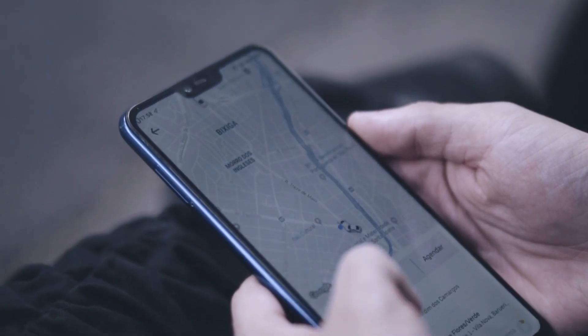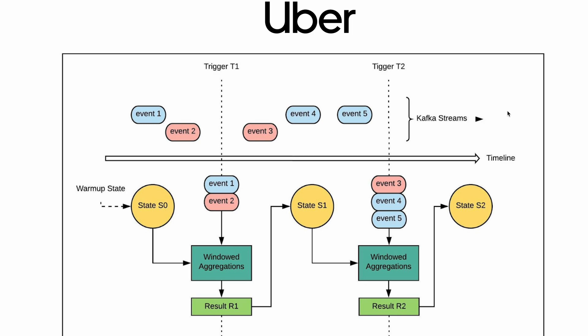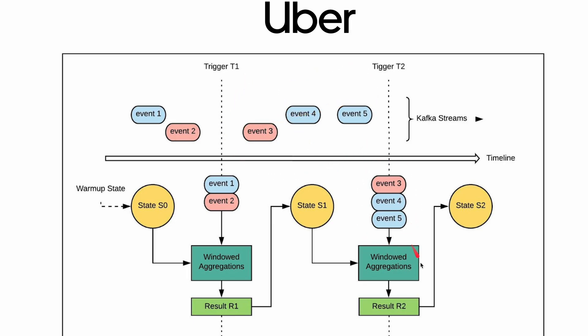Kappa Architecture enables Uber to efficiently ingest and process many data streams from GPS, user interactions, and driver updates, allowing quick reactions to changing conditions — like prices going up and down. For batch processing, they wait for events to occur together using triggers like T1 and T2. Events between triggers are combined through windowed aggregation into states. It's a semi-batch approach — not as optimal as true batch and is compute-intensive.